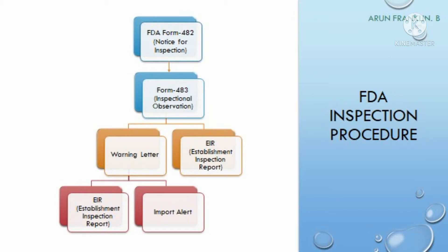The FDA auditors will inspect six systems in the pharmaceutical industry: the quality system, the production system, the facilities and equipment system, the laboratory control system, the material system, and the packaging and labeling system. They will inspect all six systems.